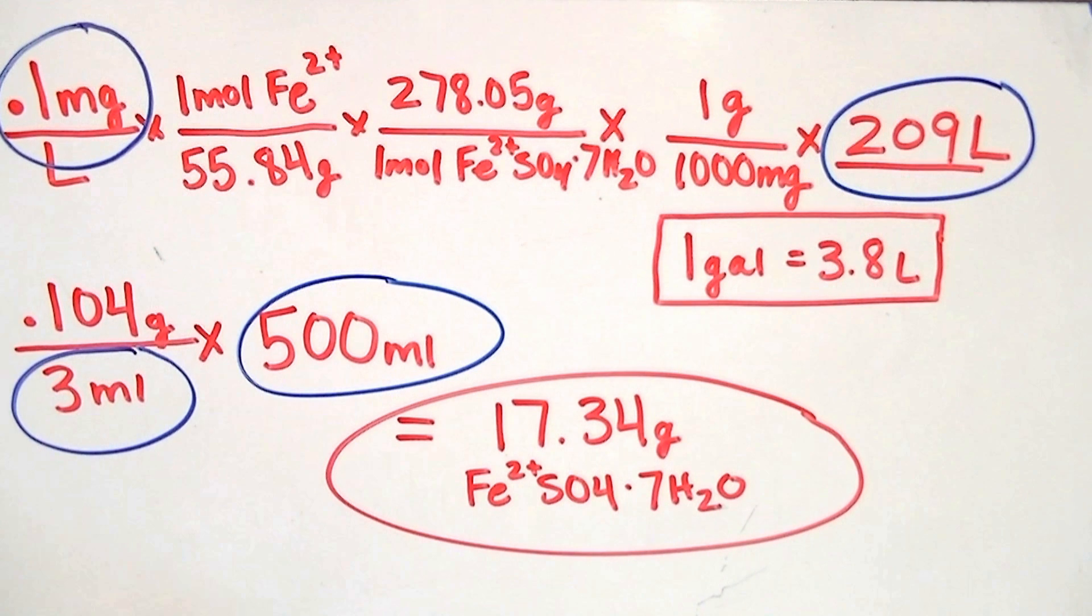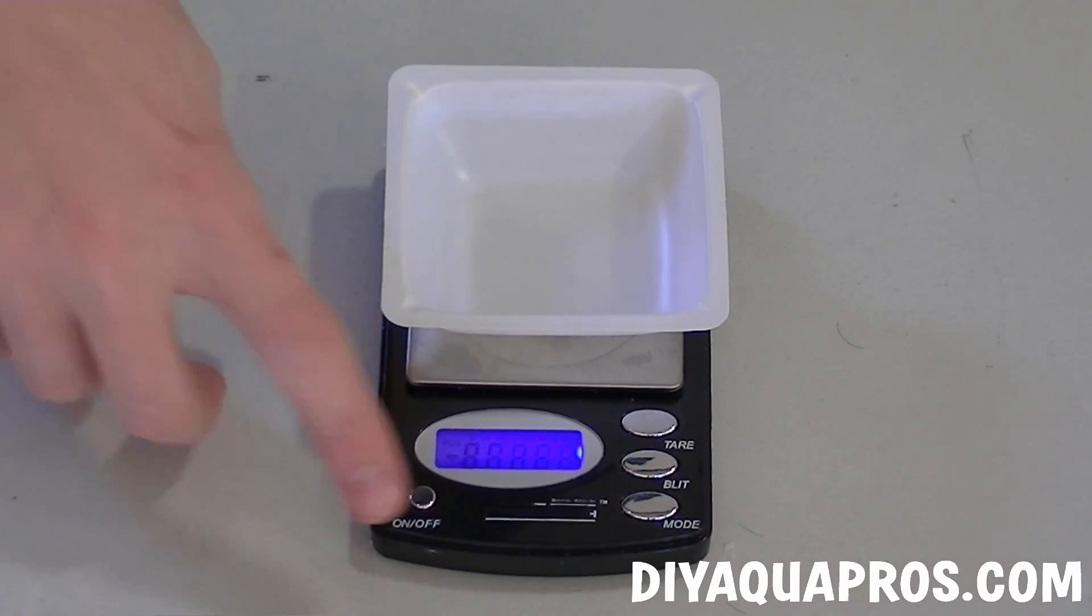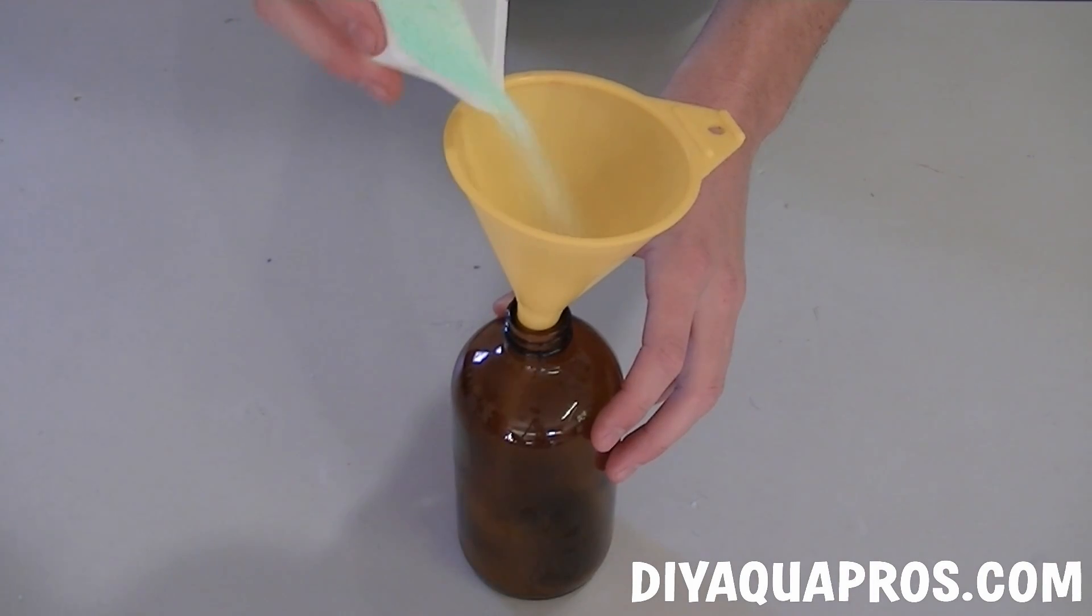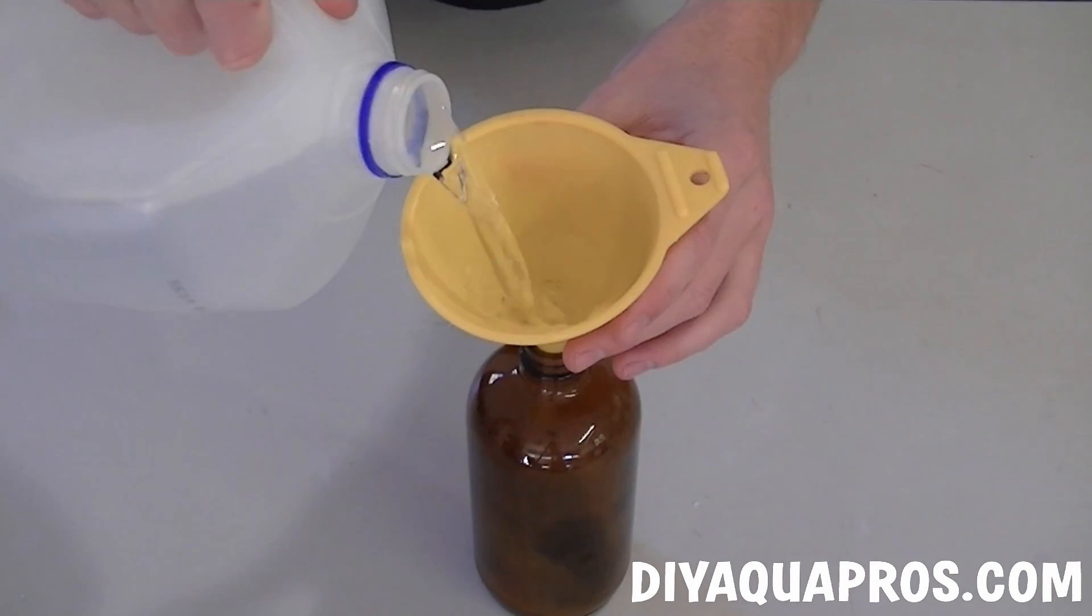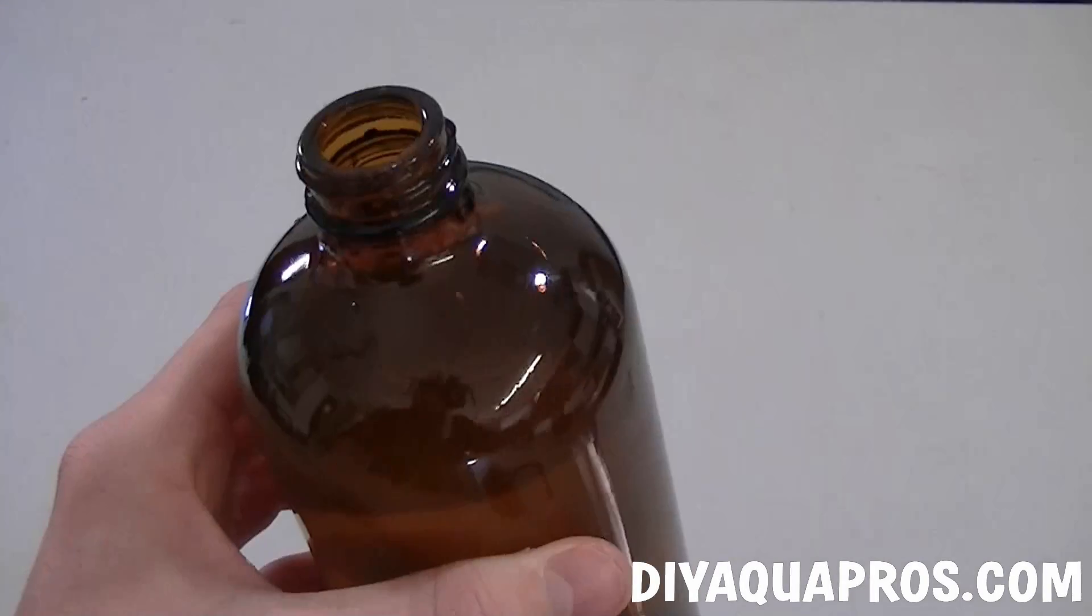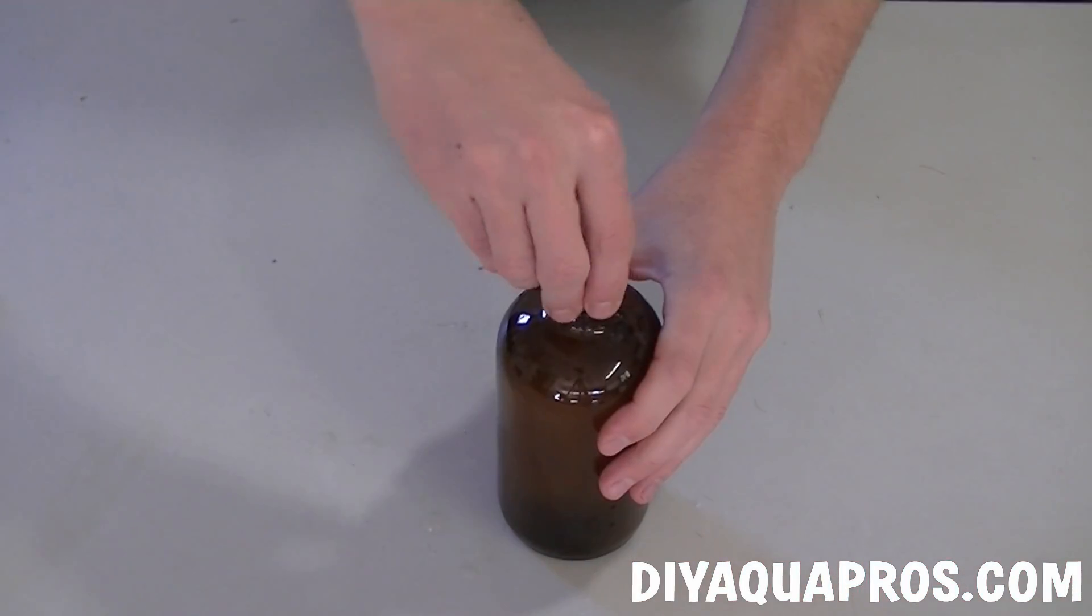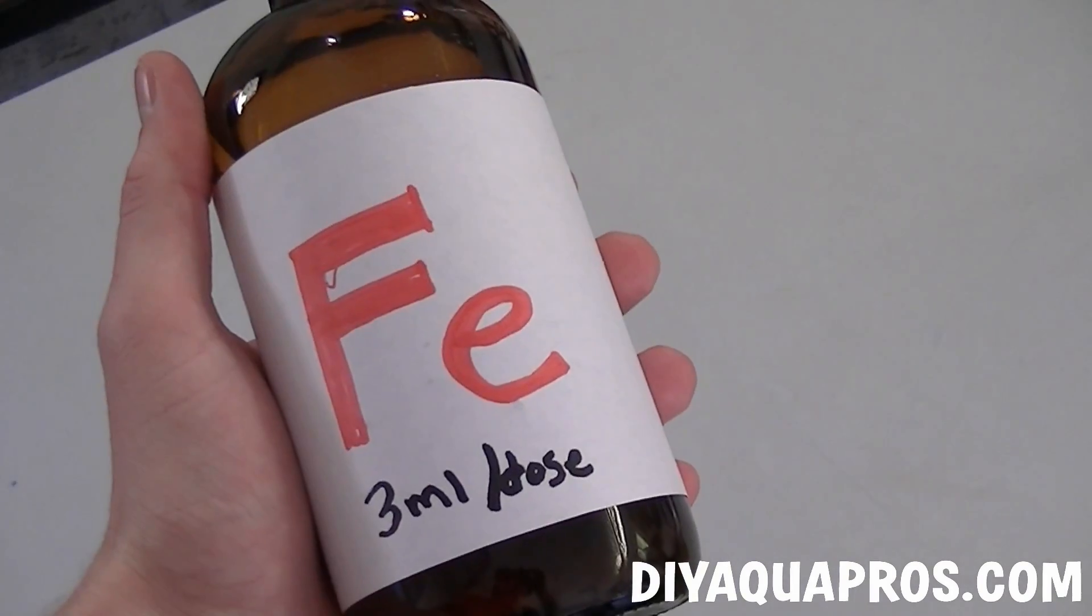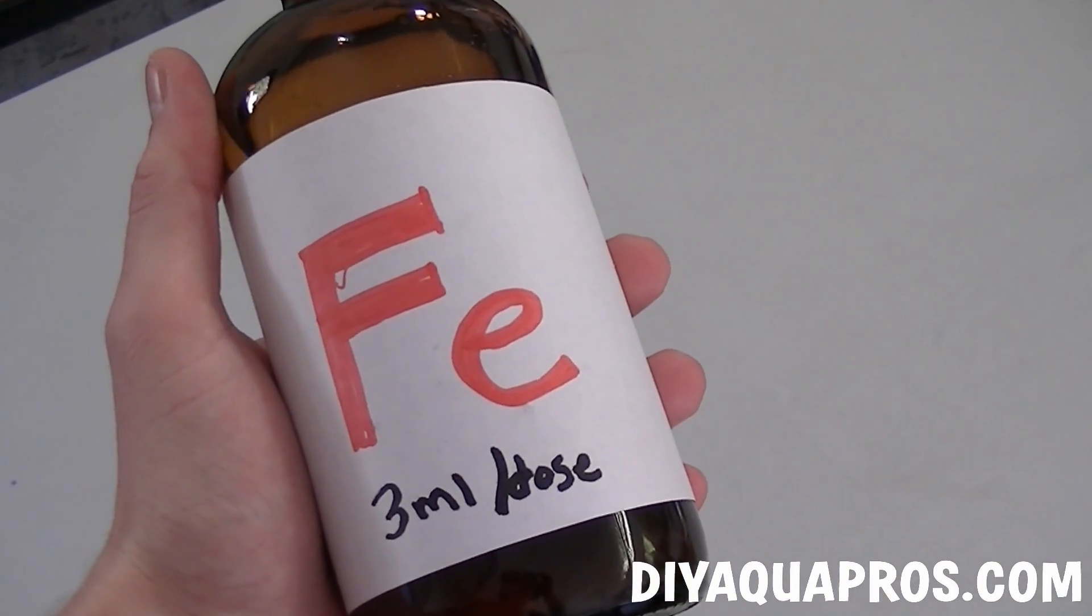Now let's get back to the project and make our solution. Start by turning on your scale and weighing out the appropriate amount of iron 2 sulfate which you calculated previously. Add your fertilizer to your container with the help of a funnel. Using your distilled water, fill your container all the way to the top. Screw on your cap and shake well for about 30 seconds to dissolve all the fertilizer. Don't forget to add a label with the appropriate dosing information.